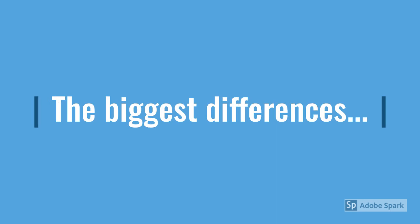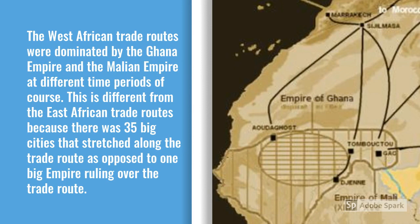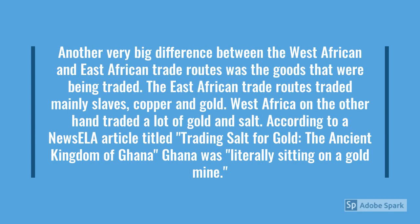What I'll be going over in this slideshow is the biggest differences between the West African and East African ancient trade routes. To start it off, we're going to first talk about how the trade routes were dominated and how they were run. The West African trade routes were dominated by the Ghana Empire at one point in time, and the Mali Empire at a different time. This is pretty different from how the East African trade was run, because it was run with 35 big cities that stretched along the trade route, as opposed to one big empire controlling the trade route.